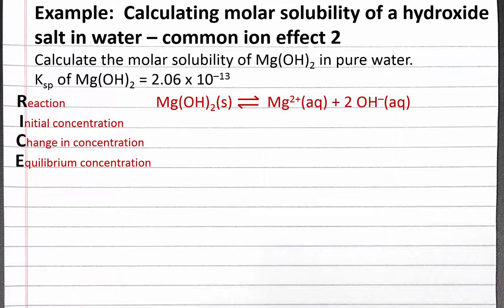We do not need to keep track of solid magnesium hydroxide in our RICE table because solids are not in the equilibrium constant expression. Since we're dissolving magnesium hydroxide in pure water, we don't have any magnesium ions to begin with. However, pure water does have a hydroxide ion concentration of 10 to the negative 7 molar at 25 degrees Celsius.